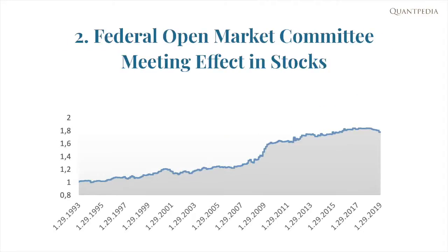The second anomaly is the Federal Open Market Committee meeting effect in stocks. According to past research, the S&P 500 index average daily returns during the FED meetings since 1980 are outstanding — more than five times greater than the returns during the other average days on the market. Dates of the FED meetings are publicly known and available. Therefore, such an effect could be easily utilized in a seasonal strategy that would long the S&P 500 index during these FED meetings.